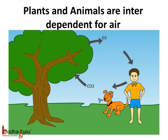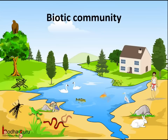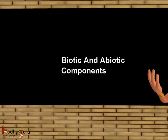The most important thing to remember is that plants and animals, including us human beings, are interdependent on each other for air. The plants need carbon dioxide for their preparation of food and release oxygen gas. On the other hand, animals, including us human beings, take in oxygen and give out carbon dioxide. Thus, the biotic components are interdependent. A group of interdependent organisms that live in the same region and interact with each other form a biotic community.